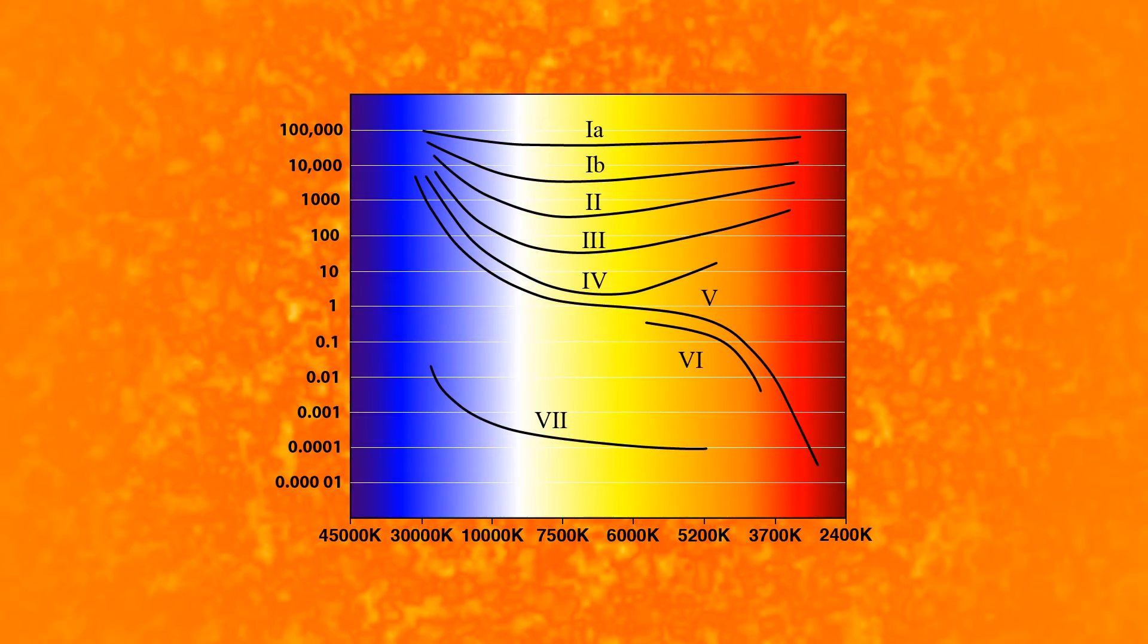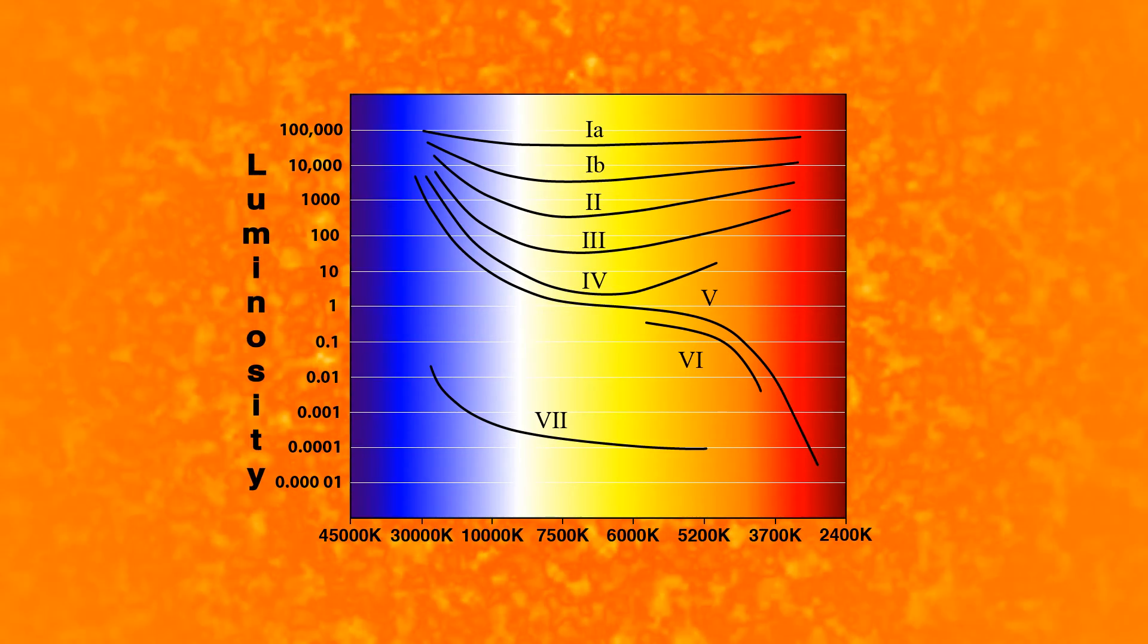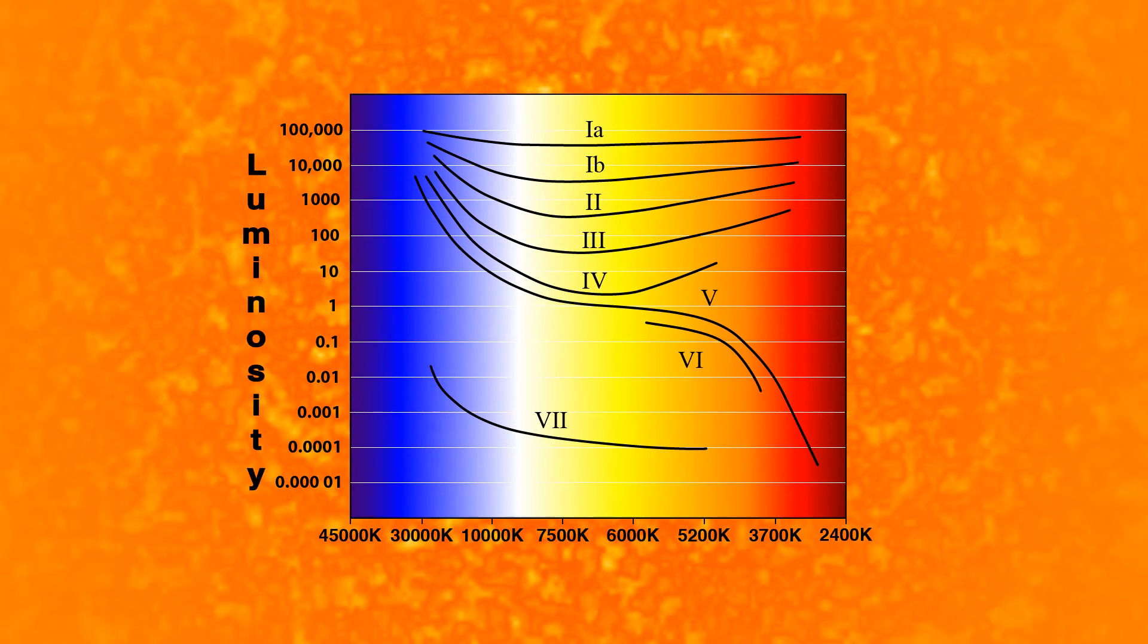Stars are categorized by how bright they are, called luminosity, and their color, which reflects their temperature.